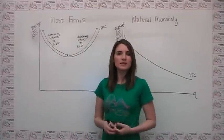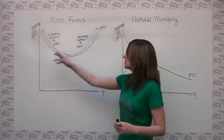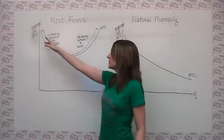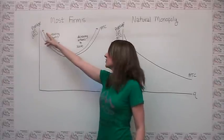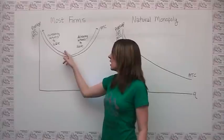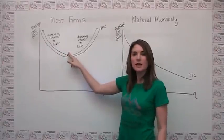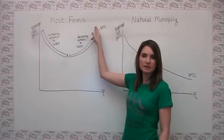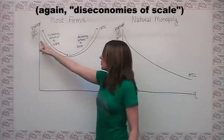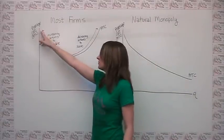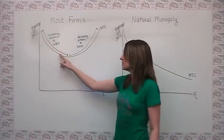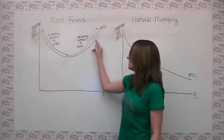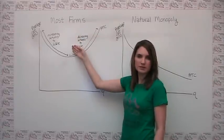In most cases, companies have a U-shaped average cost curve, as we see here. What this means is that they enjoy economies of scale, or increasing returns to scale, up until a certain point, and then they start seeing decreasing returns to scale after that. Put another way, we can say when the average total cost is decreasing, we have increasing returns to scale. And when the average total cost is increasing, we have decreasing returns to scale.